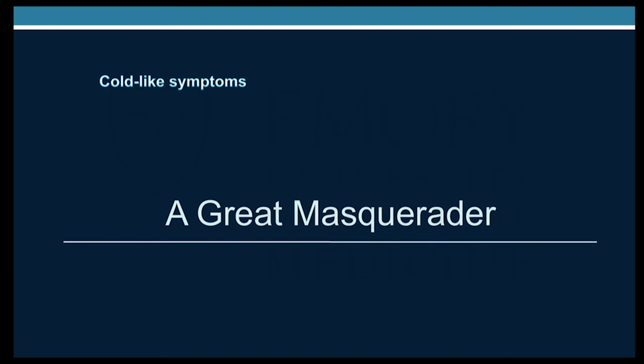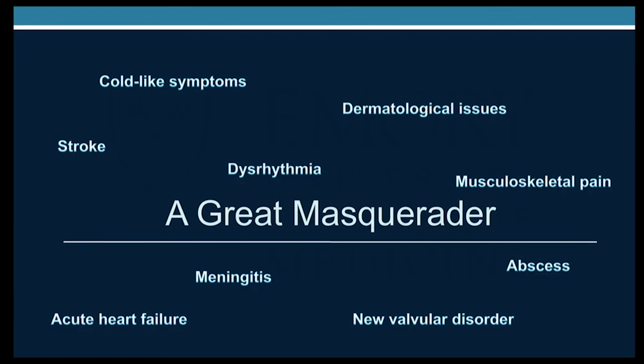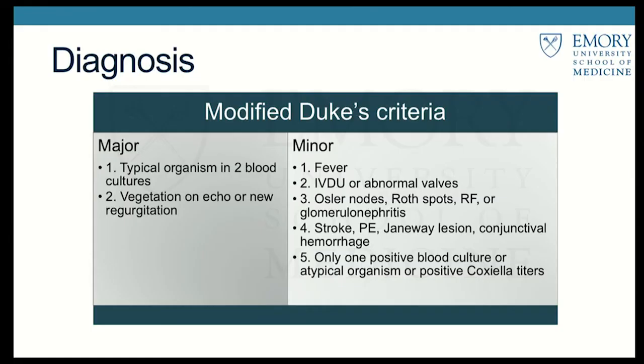Part of the issue with endocarditis is that it can masquerade in many different forms, requiring a high index of suspicion. The primary presentation is fever. Patients may also present with cold-like symptoms, acute heart failure, dermatological issues, new valve disorder, stroke, rarely meningitis — especially with Strep pneumoniae — musculoskeletal pain which could indicate underlying abscess, and dysrhythmia, as our patient presented.